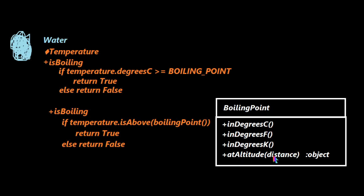There's also the at_altitude method — I'm assuming it's offset from sea level — and that's going to return an object, which I'll get to in a minute.